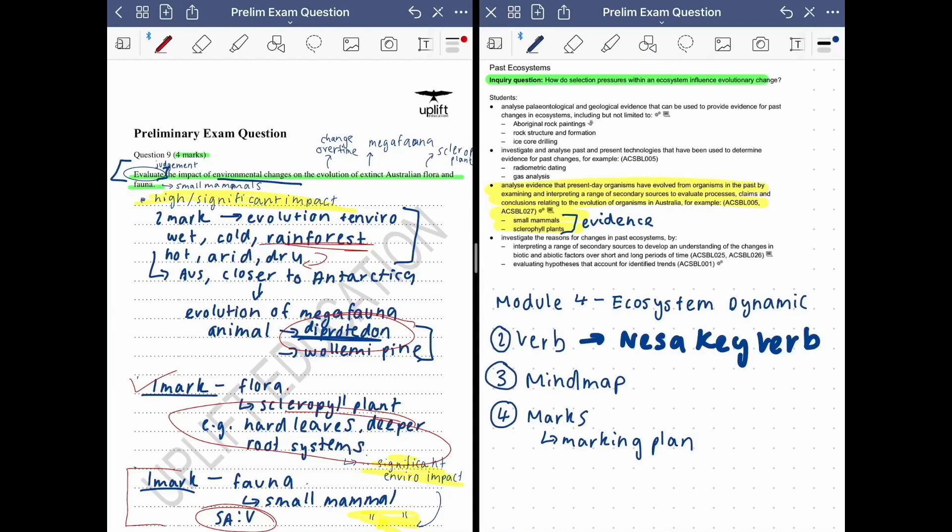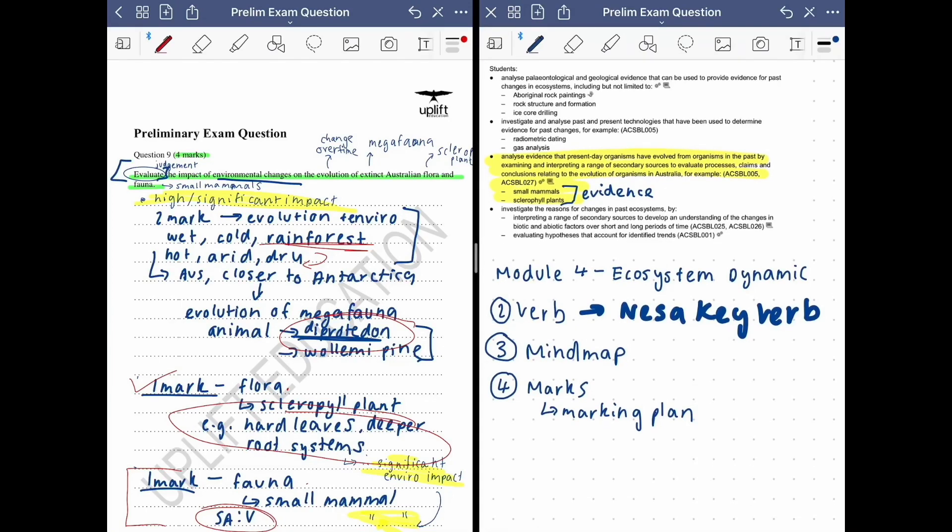Next step is doing a mind map so we've got a little plan of action before going into the question and it gives us a couple of key words to include into our response.